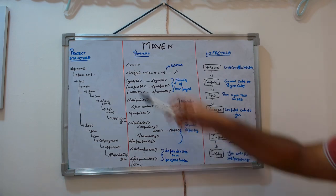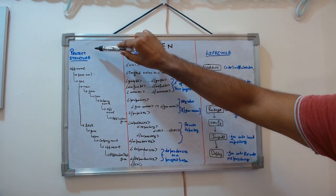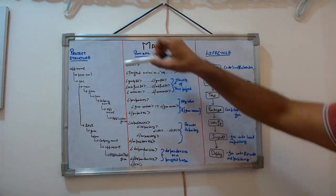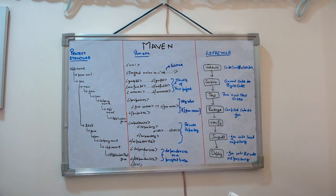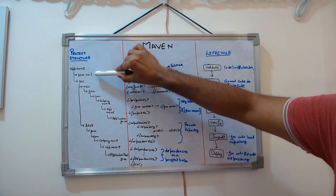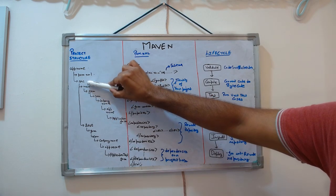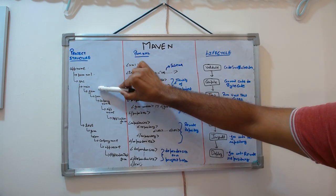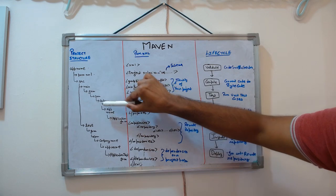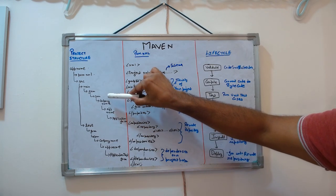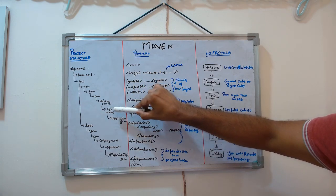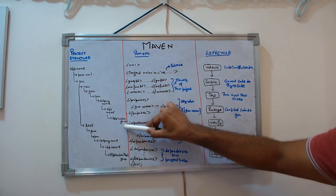When you first download a Maven project — say, the Springboard project using Maven — this is the structure Maven follows. At the top level you have your app name, for example 'learning-springboard'. Then one level down you have pom.xml, and at the same level you have the source folder. After that you have main/java/com, then your company name, then again the app name, and then Application.java.